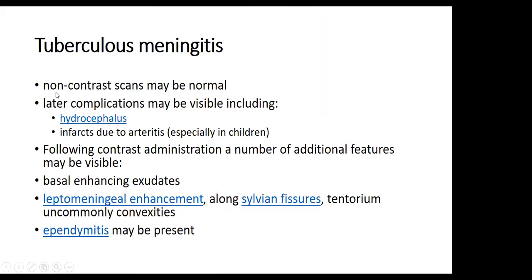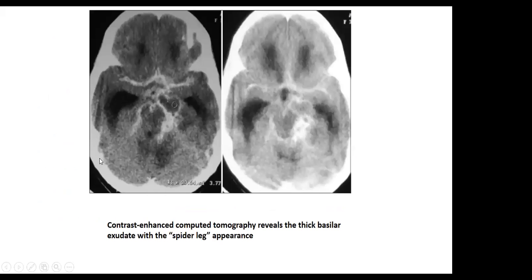Tuberculosis meningitis: non-contrast scan may be normal. Later complications may include hydrocephalus and infarction due to arteritis, especially in children. Following contrast administration, additional features may include basal-enhancing exudates and leptomeningeal enhancement along the sylvian fissure and tentorium, uncommonly at the convexities. Ependymitis may also be present. CT contrast of a patient with tuberculous meningitis shows thick enhancement of the basal cisterns in a spider-leg appearance, along with hydrocephalus.